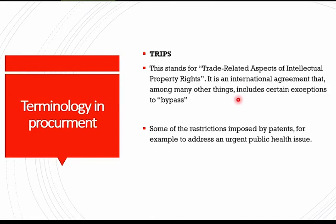However, with the TRIPS agreement, any country has the right to disregard the patent so long as they put it in writing to the World Trade Organization. If that country has the capacity to synthesize the drug — for example, Remdesivir or new vaccines — the Minister of Commerce, Trade and Industry simply needs to write to the WTO and produce a statutory instrument. Then any company in Zambia with the capacity can manufacture that particular product.